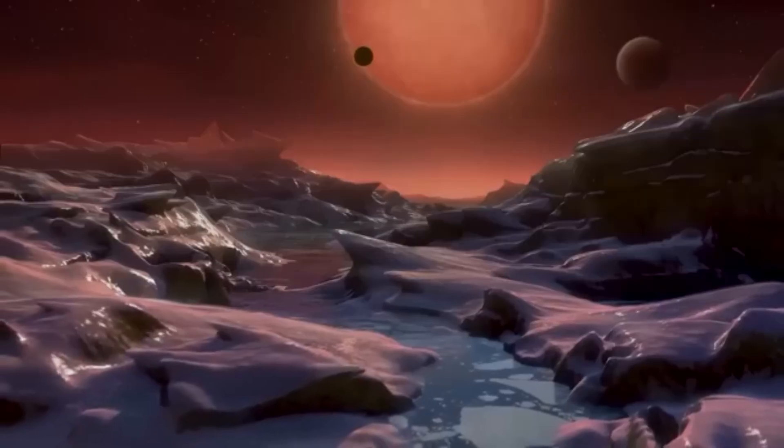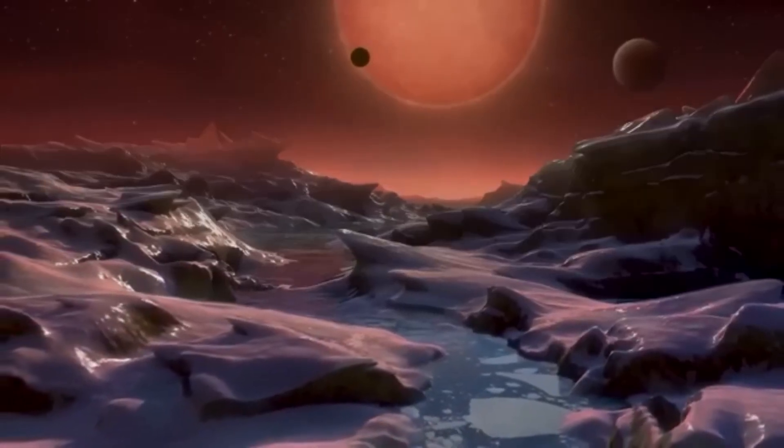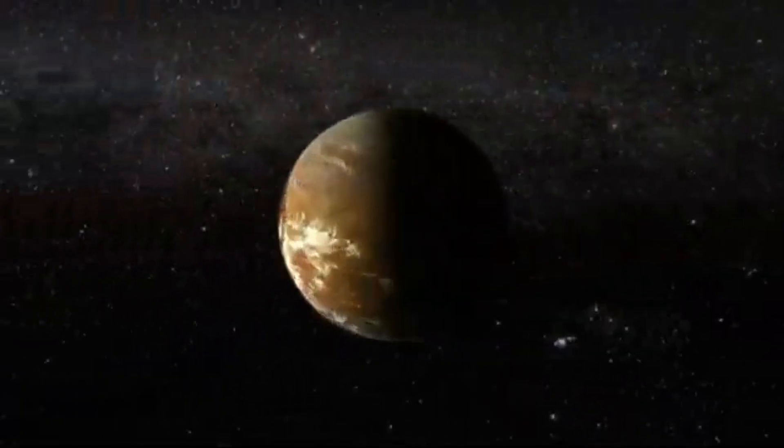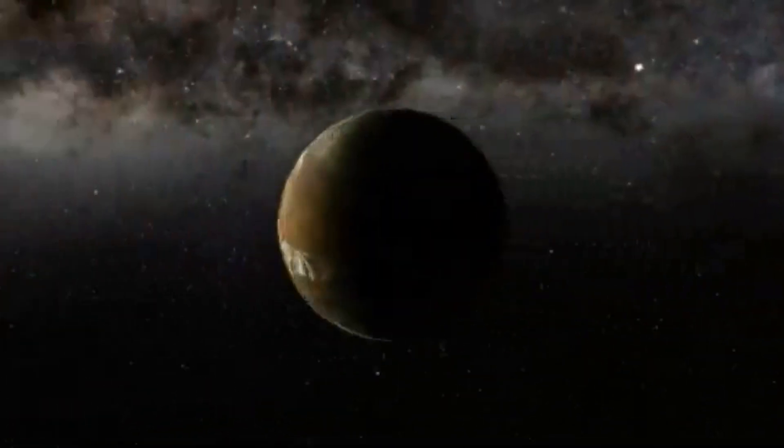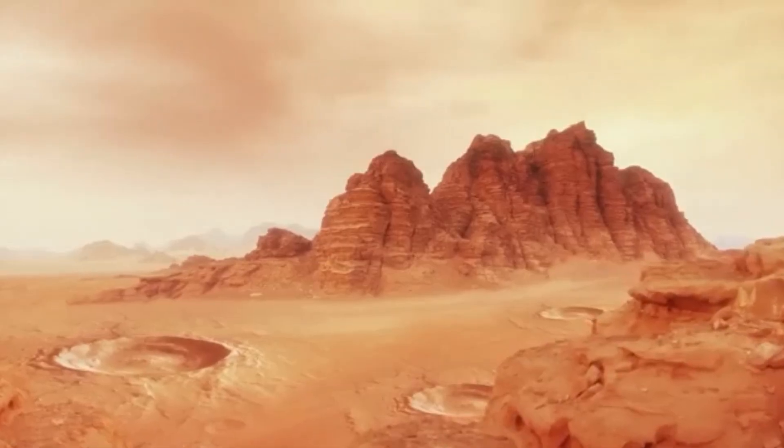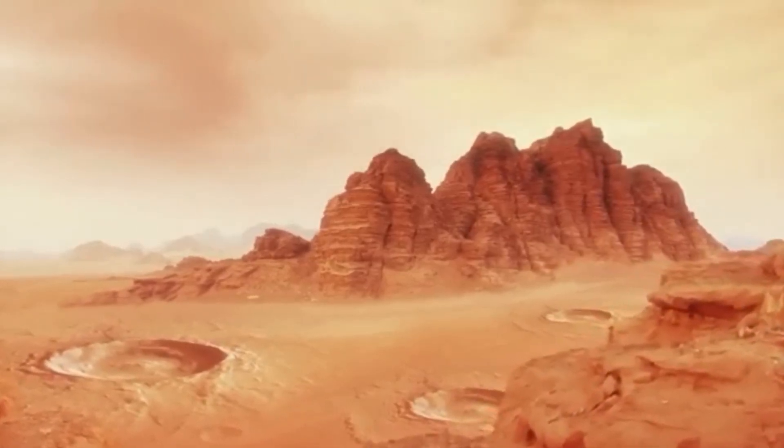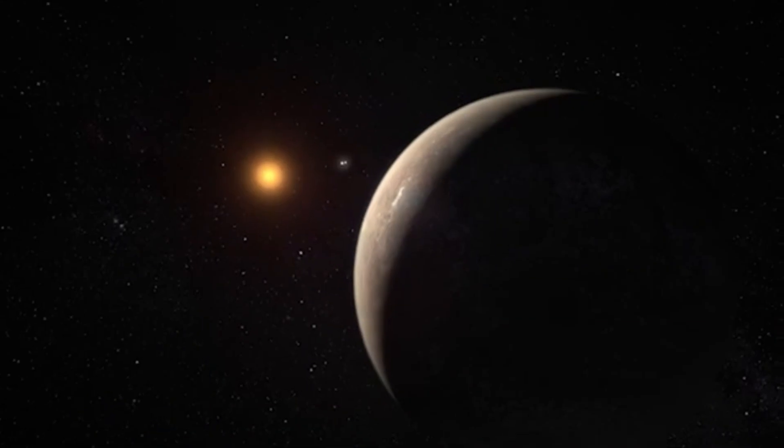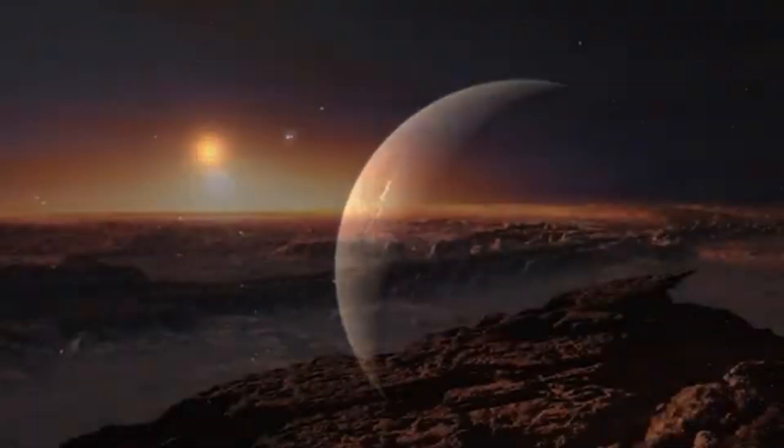The mass of Proxima b is 1.27 times that of Earth. This means its gravity would be slightly stronger, which could affect everything from atmosphere retention to how creatures might evolve there. While our Sun is 93 million miles away, the star of Proxima b is only 4.6 million miles away.